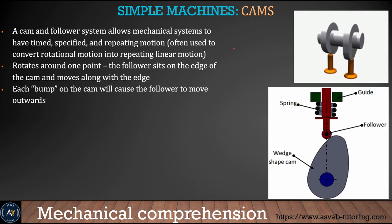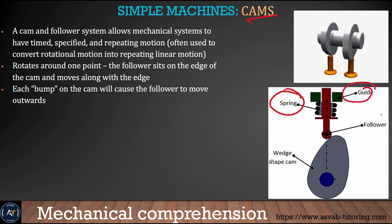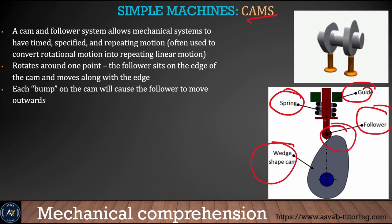A cam gives repeated motion. A cam and follower system allows a mechanical system to have timed and specific repeated motion. The parts of the cam system are: spring, guide, follower, and cam wedge. If you have a single lobe, it gives you one repeated motion per cycle; if you have two lobes, it gives you two repeated motions.